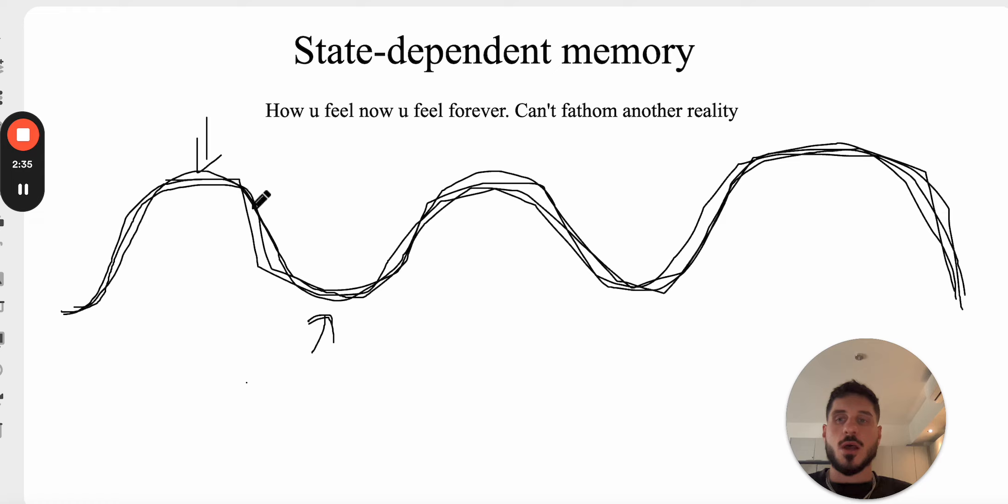Now, state-dependent memory, what happens? What will happen is your brain will basically take a snapshot of one of these areas and it's going to extrapolate it to the fucking future forever. And when you're in these little boxes right here, you cannot fathom the other box. How many times, it's the meme, right? Oh my God, it's so over. Oh my God, we're so back. This is what's happening.